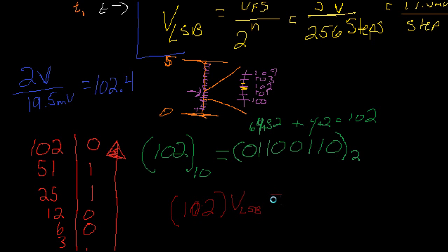So 102 times 19.5... and we actually get an output voltage. When we convert from digital back to analog, we're going to end up...